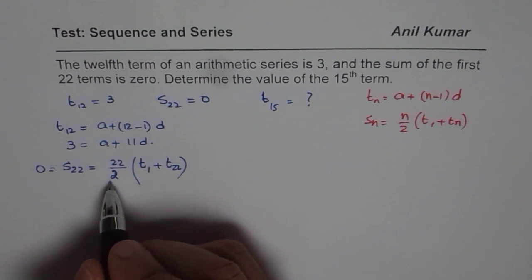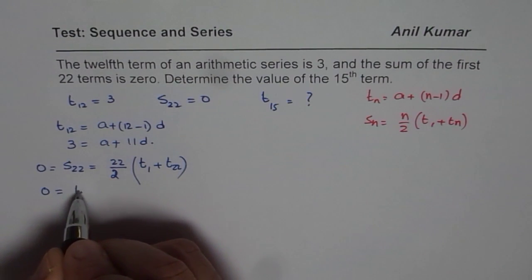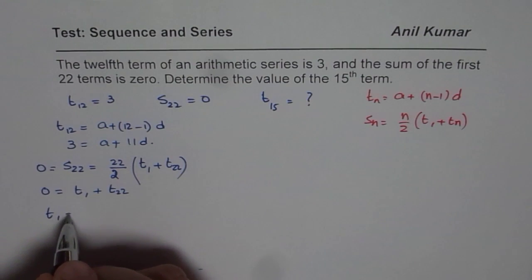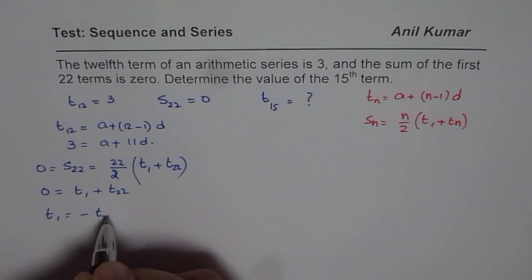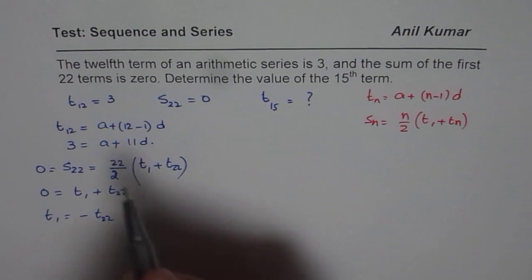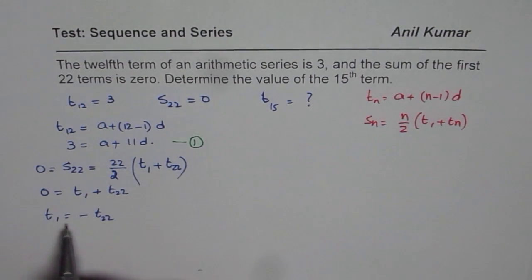Because 22 over 2 is 11, so that clearly indicates that at this stage, 0 equals T1 plus T22, or you could also say T1 is minus of T22. So that is how we get a relation. And this relation helps us to get the second equation. We already got one equation, which is 3 equals A plus 11D. Let me number this as 1.